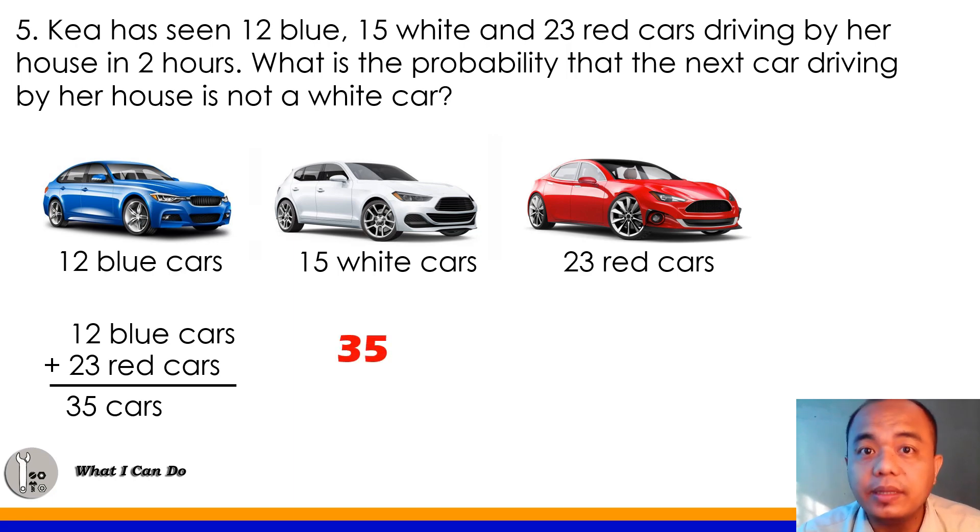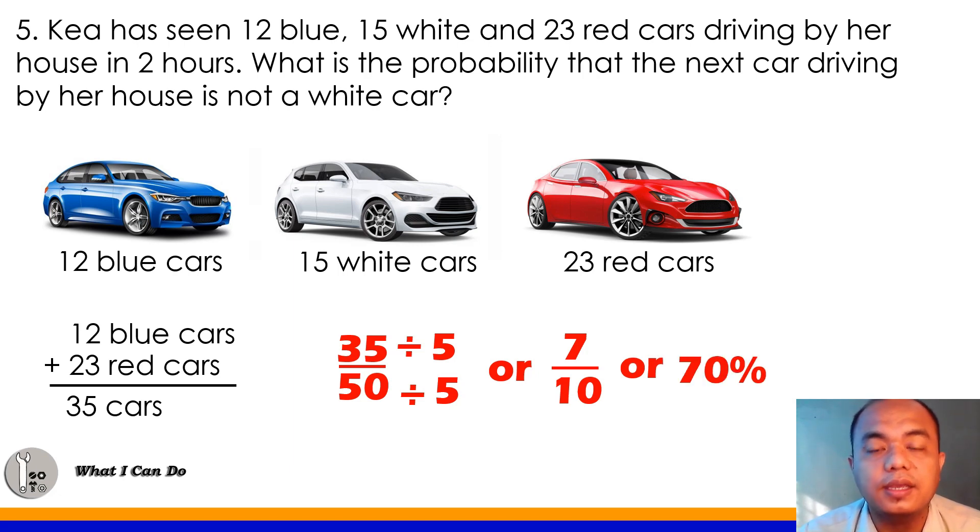So, that 35 class, we will use that data over 50. If you add them all, 12 plus 15 plus 23, that's 50 total. So, 35 over 50 are non-white cars that passed by Kia's house. Reduce that to lowest term. That's 35 divided by 5, of course. So, 35 divided by 5 would give you 7. And, 50 divided by 5 would give you 10. Or, percent form would give you 70%. So, meaning, 70% is the total possibility that non-white cars will pass by Kia's house.